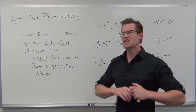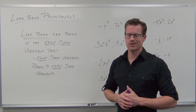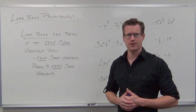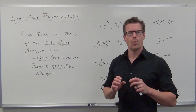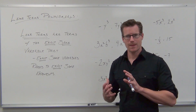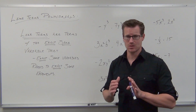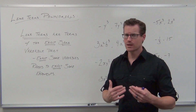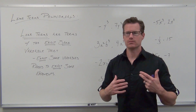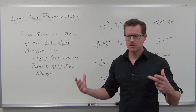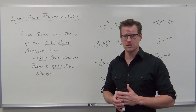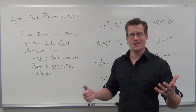Notice how this has nothing to do with the coefficients — I could not care less about what the coefficients are, whether it's negative one-third or seventeen million. What like terms have to do with are the variables. They have to be identical. So this is a quick lesson. We're going to go through and look at what like terms mean. I'm going to give you some pairs of terms, and we're just going to determine whether they're like terms or whether they're not.